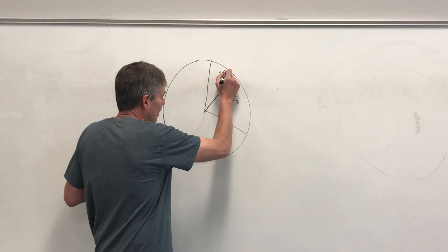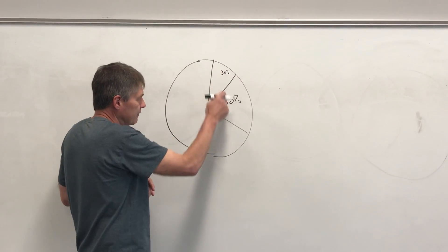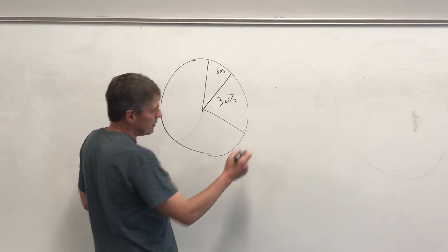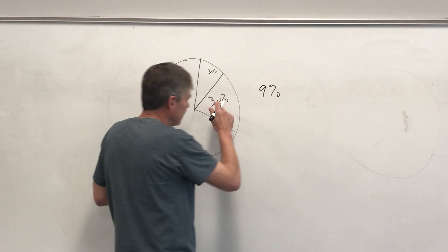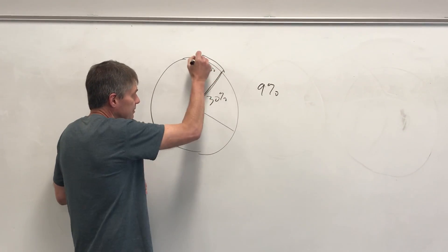Let me make that a little small. Which would be what? About 9% of the big pie. This area right here is 9%.